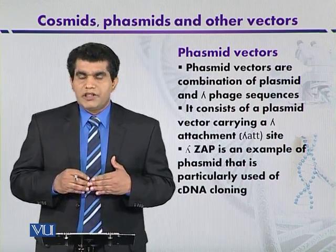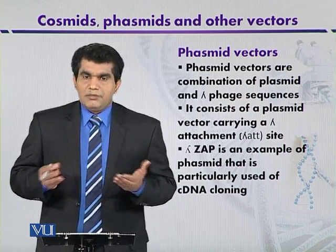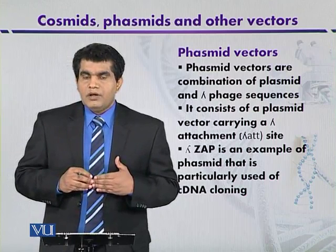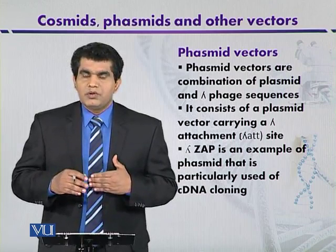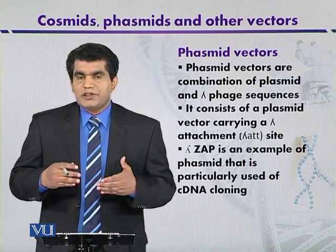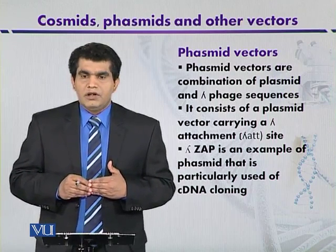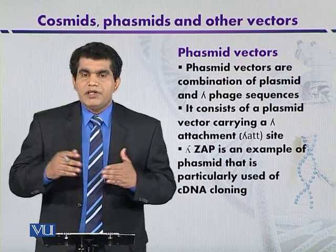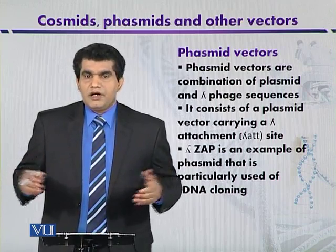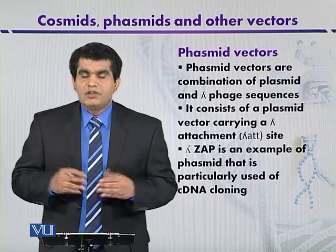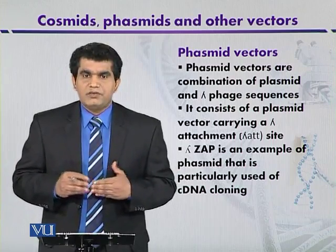Another advantage is that the foreign DNA can be excised from the lambda genome. Additionally, phasmids can be used to express fusion or hybrid proteins, and if foreign DNA is inserted, RNA transcripts can also be synthesized. These are the different advantages of phasmid vectors.